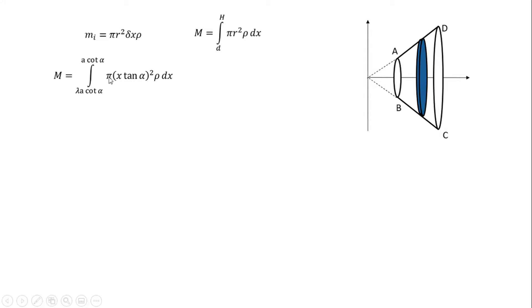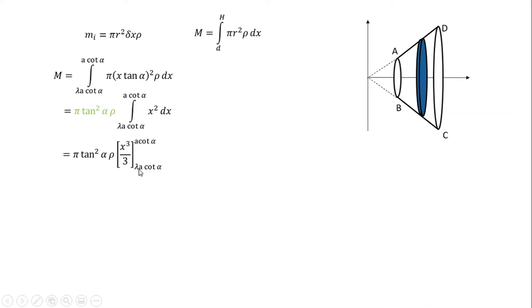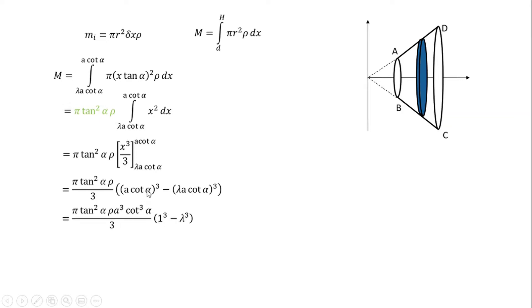So let's take all the constants: pi, tan alpha, into rho. Then we add x over x, so x cubed over 3. The top is a squared alpha, the bottom is a squared alpha. So if you have lambda a cubed tan alpha cube, 1 over 3 is equal to 1 over 3. If you have a quad alpha cube minus lambda a quad alpha cube, that is 1 cube minus lambda 1 cube.